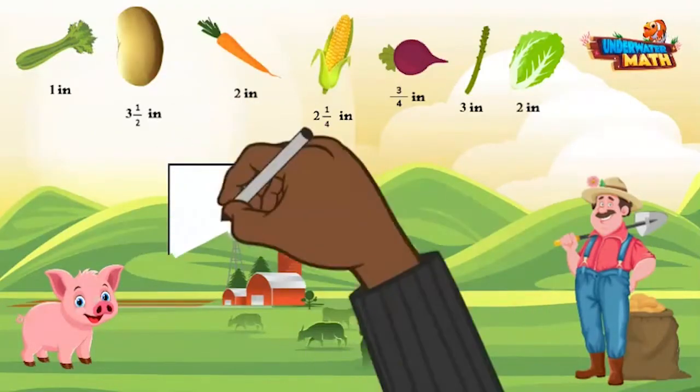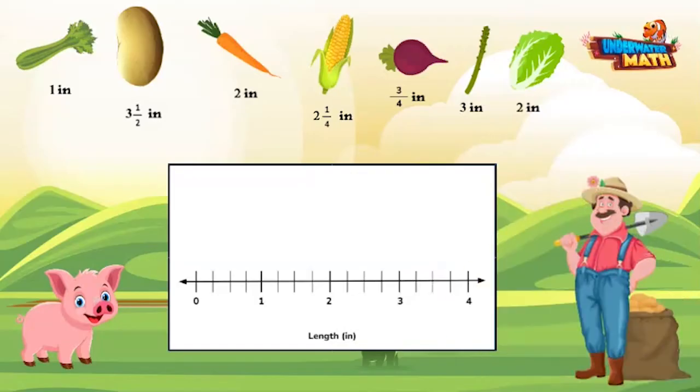Let's now get the data from the lengths of the seven vegetables and make a line plot. Start with a number line that includes every data measurement you collected, so zero inches to four inches. For every data number we measured, we are going to put an X on the line plot.